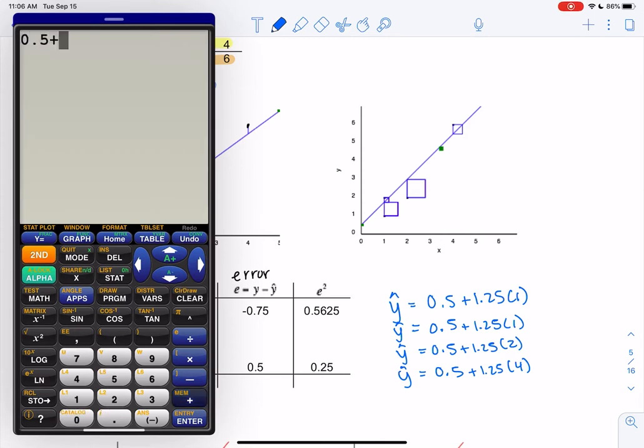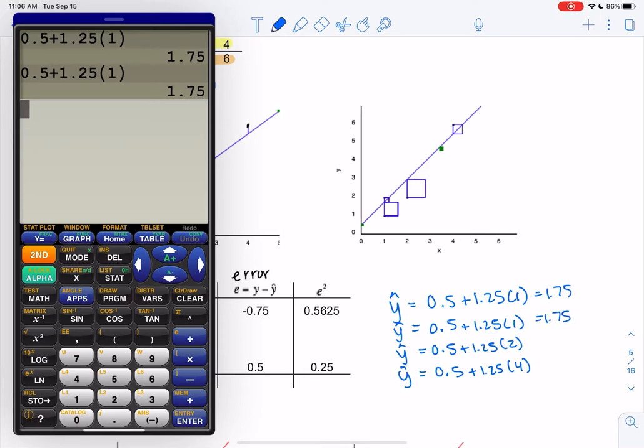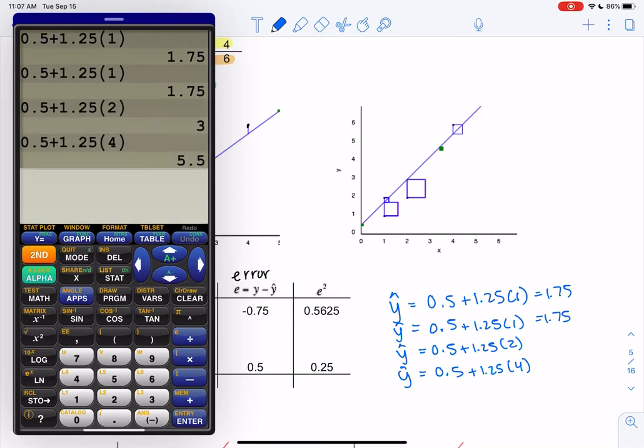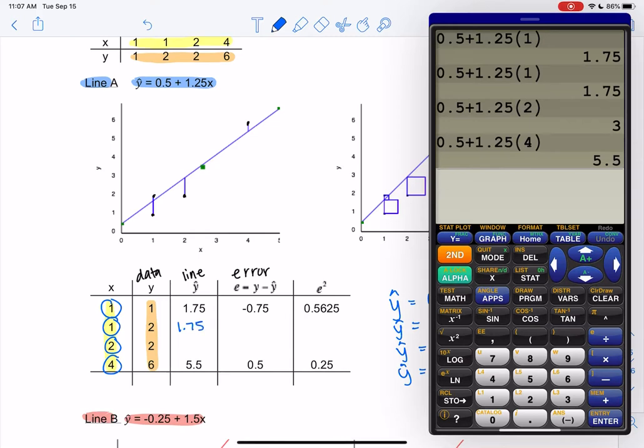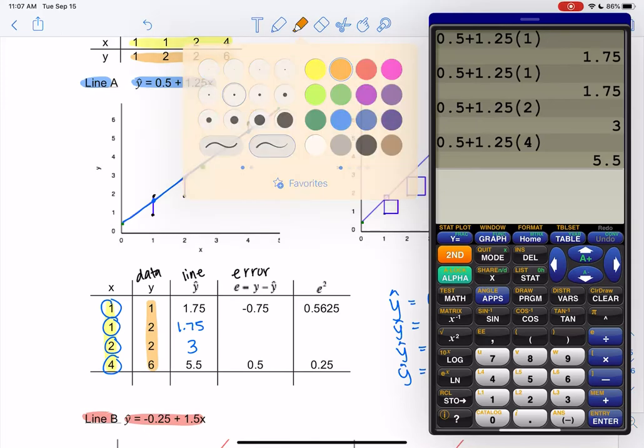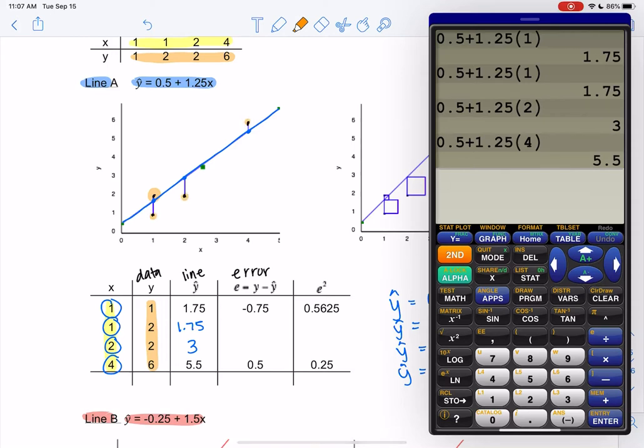So let's find the y hats, and then we'll find error after. So 0.5 plus 1.25 times 1. And then we'll do 1 again, which we really don't need to do, but we'll get 1.75 twice. And then we'll plug in 2. And then we'll plug in 4. And then I'll come back to the table. So we get 3 and 5.5. So let's fill those in. So these are the predicted values from the line. So these are the actual points on the line now versus the points of the data. So hopefully we see the difference. So the blue ones are on the line. The black ones are the actual data values. I'll make those orange to color code.